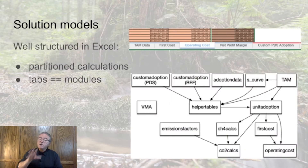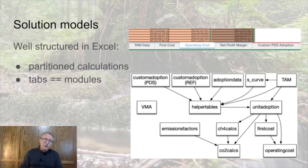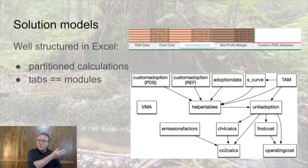The Excel implementation of the model is well structured. There are tabs in the spreadsheet to encapsulate the different modules of the overall model. Operating cost is a tab in the spreadsheet. The estimate of adoption over time is a tab, and so on. The Python implementation follows the same structure. Each module defined as a tab in the spreadsheet has been implemented as a Python class, and data flows through the Python implementation in the same way that it flows through the spreadsheet.